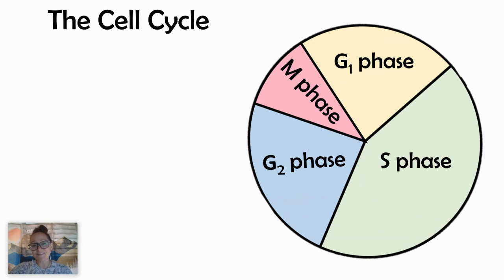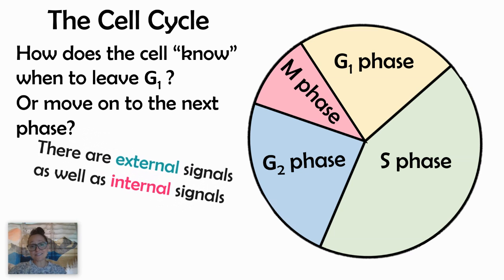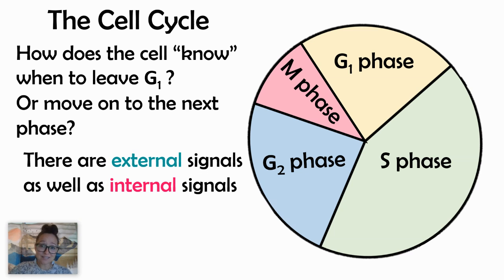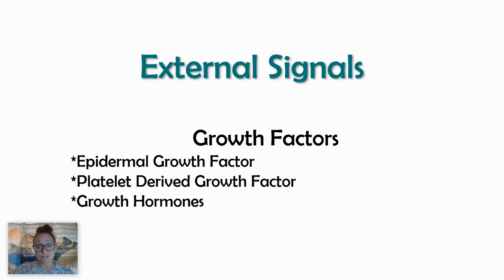When we look at the cell cycle, our big question is: how does a cell know when to leave G1, or move from S phase into G2, or from G2 into M phase? What we're going to discuss are external signals as well as internal signals. When we talk about external signals, this is going to be growth factors — when a cell receives a ligand to divide, that is an external signal.